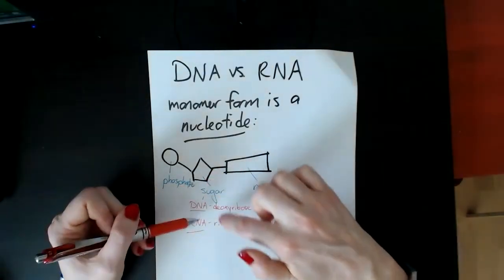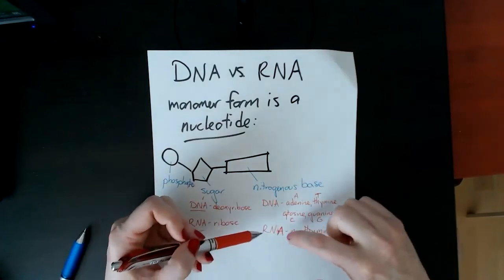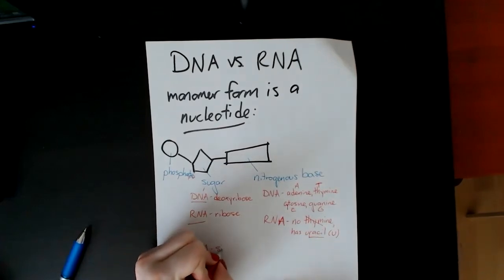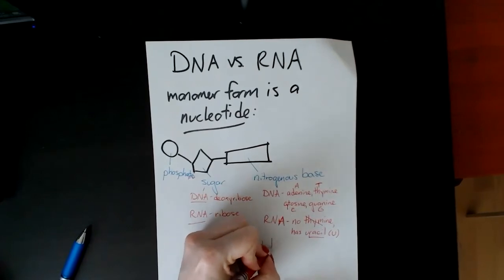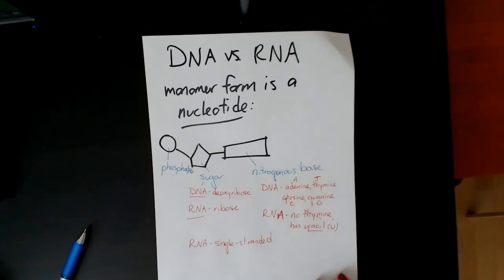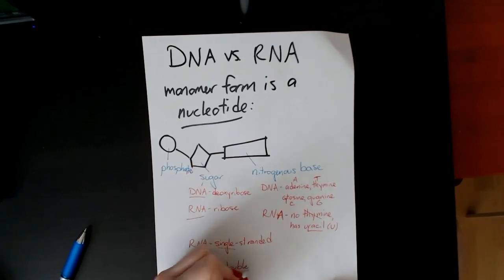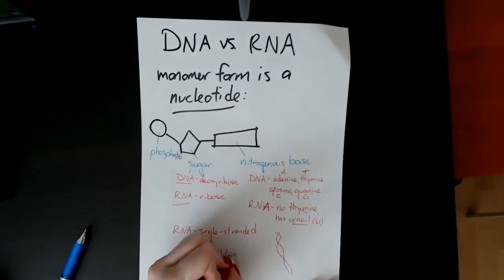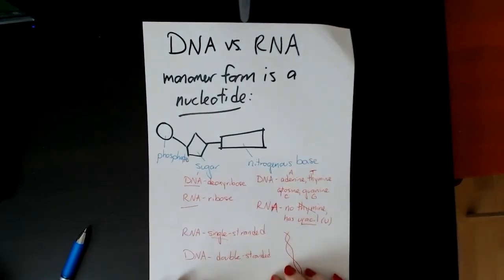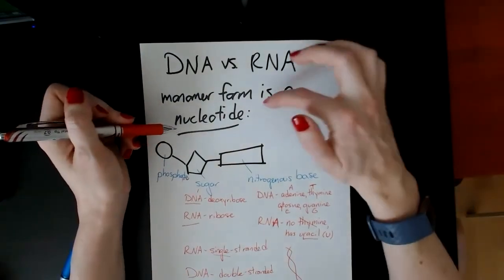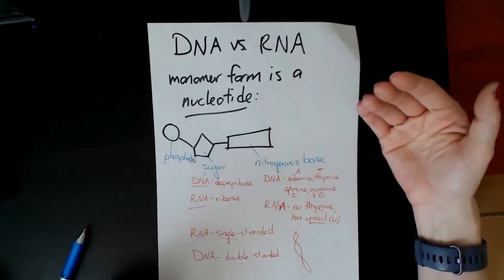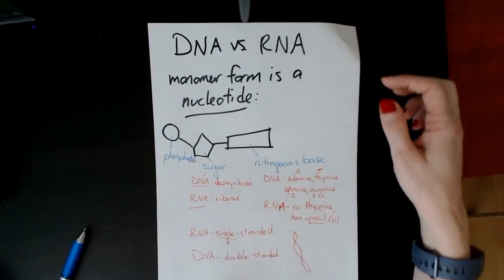So there are two key differences: they have different sugars, and there's one nitrogenous base found in RNA that's not in DNA. The other difference is that RNA is always single-stranded — the mRNA and tRNA are both single-stranded — while DNA is always double-stranded, that double helix with two strands connected. So when comparing RNA and DNA: both have nucleotides, but the sugar is different, one base differs, and RNA is single-stranded while DNA is double-stranded.